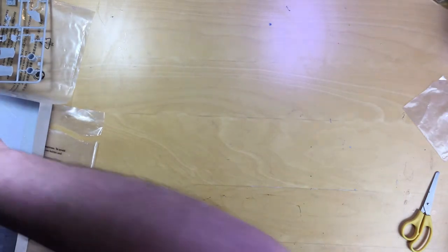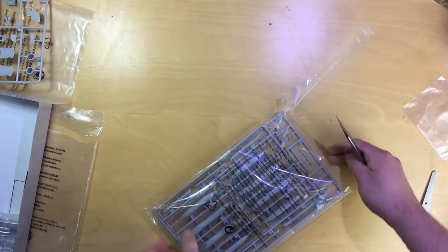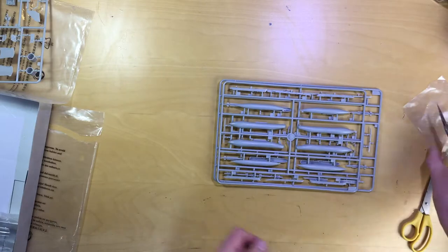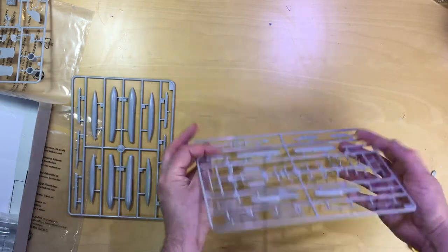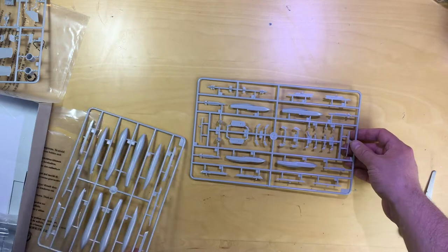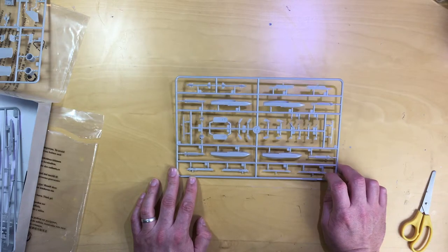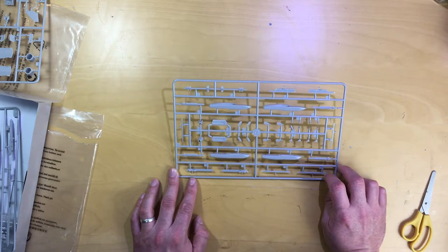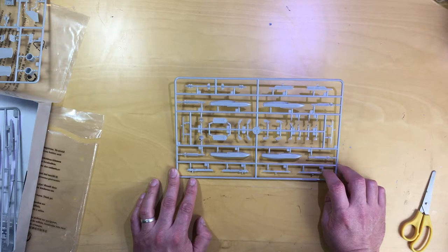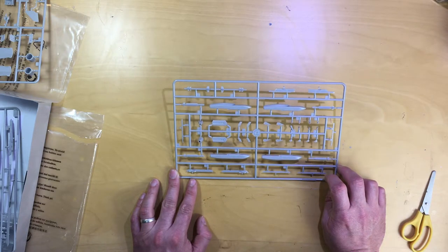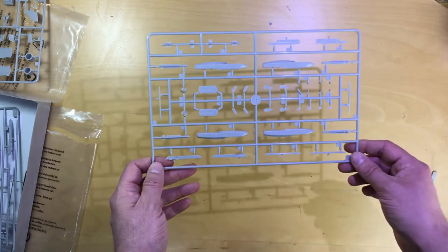Two sprues in this bag - the weapon sprues. This one has the Magic missiles and MICA missiles and the Apache missiles. The Magic missiles look a little bit clumsy maybe, a little bit big. The MICA missiles look quite nice. And the Apache missiles should make quite a nice rendition of the cruise missile once it's all built together.